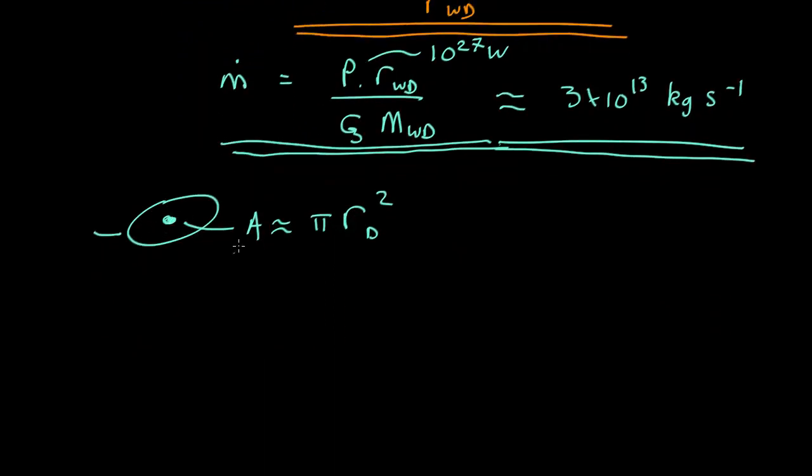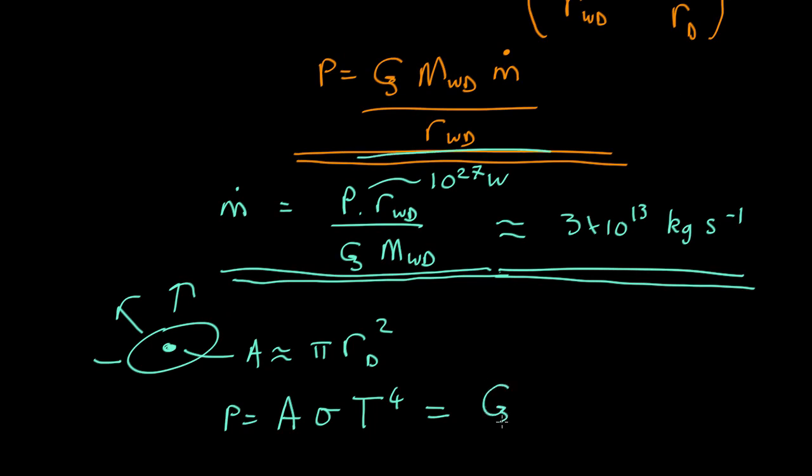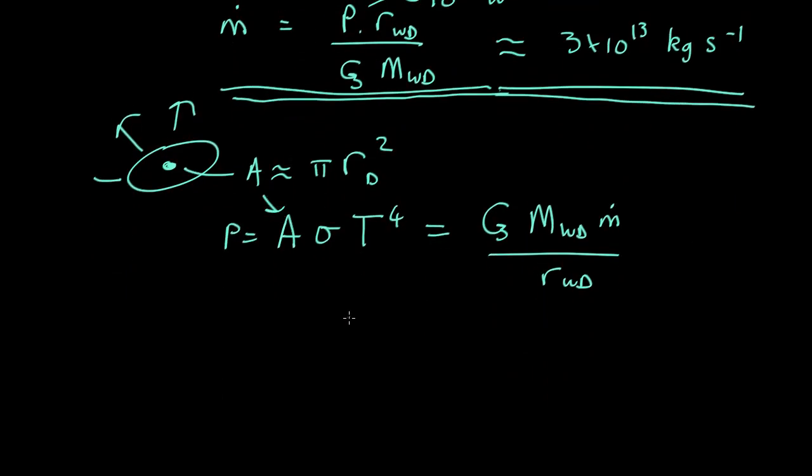So let's say the whole thing is heated up by this friction to some temperature T. The amount of energy radiated, given by the Stefan-Boltzmann equation, the power radiated equals the area, Stefan-Boltzmann constant, T to the fourth power. And that must be equal to the luminosity, which is given by this equation up here. So that equals G M white dwarf M dot over the radius of the white dwarf. So if you plug in the area here, we end up calculating that the temperature is equal to the fourth root of G M white dwarf M dot, the rate at which matter is falling in, over pi R_D squared R white dwarf sigma.